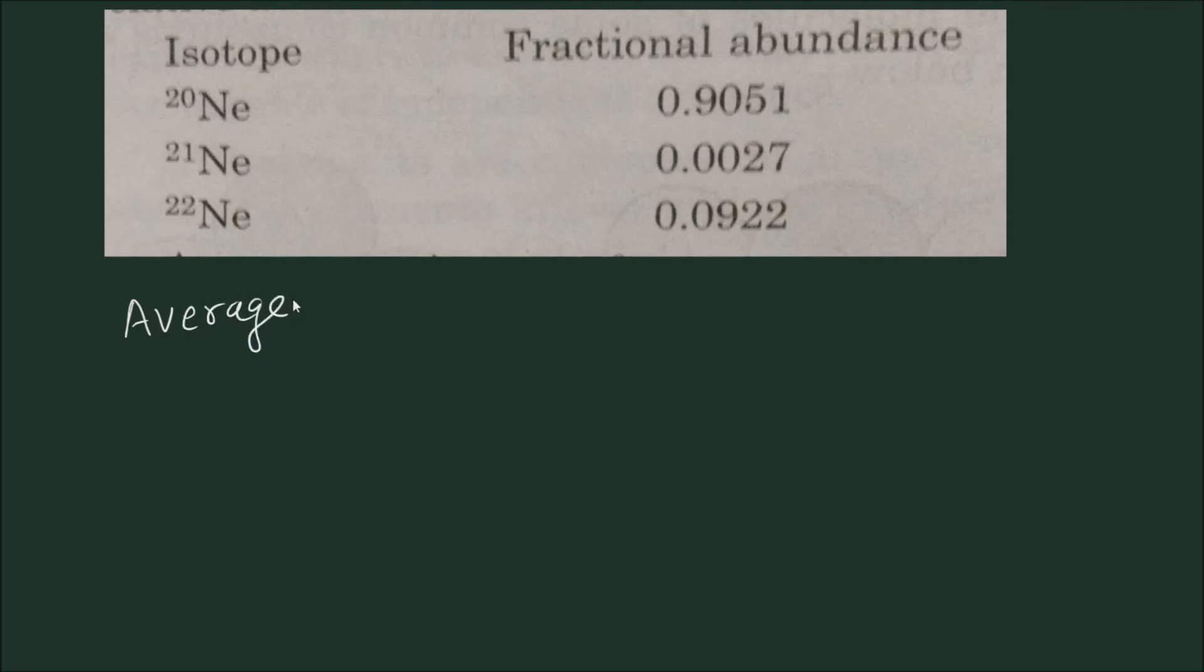given, so you should take the mass number as atomic mass. So average atomic mass of neon equals 20 times 0.9051 plus 21 times 0.0027...